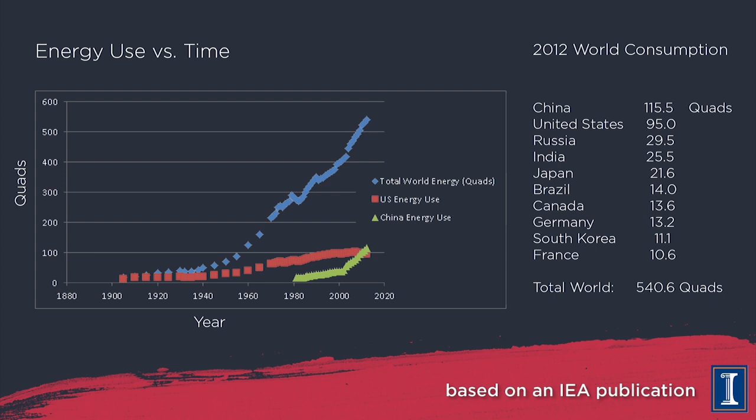Back to the countries of the world and who uses the most energy: China uses the most and the US the second most — 115 and 95 quads respectively — dramatically above the rest of the list. Number three right now is Russia, very close to two other major countries: India and Japan. These three countries — Russia, India, and Japan — all have energy use in the range of 20 to 30 quads per year, but they represent three very different modes of that energy use.